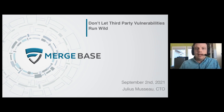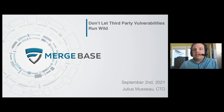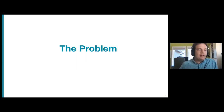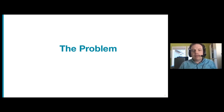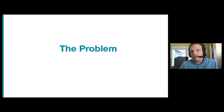I'm Julius Musso, CTO and co-founder at MergeBase. At MergeBase, we're working specifically on an AppSec problem — application security — and what's called the software composition problem. For the last 15 years, software has been increasingly built from open source components and libraries. These libraries and components now constitute the majority of the global software supply chain, and this trend is increasing every year, with more frameworks and more libraries coming from open source repositories.